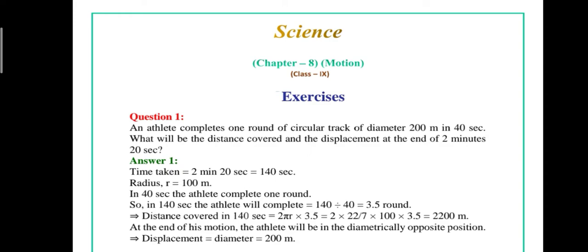In 40 seconds the athlete completes one round, so in 140 seconds the athlete completes 3.5 rounds. Distance covered equals 2πr multiplied by 3.5. Taking π as 22/7, we get 2 × (22/7) × 100 × 3.5, and the answer is 2200 meters.